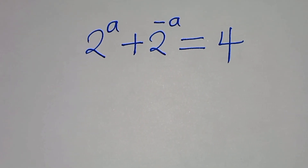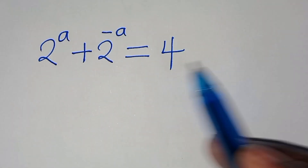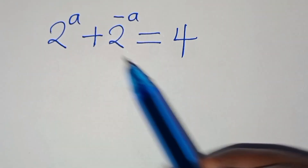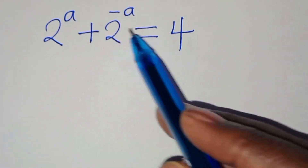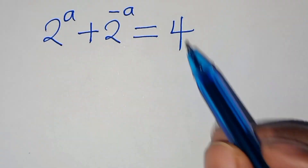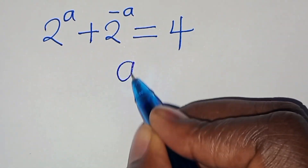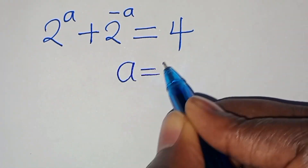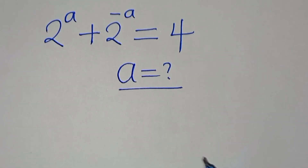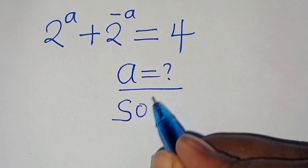Hello everyone, you are welcome to solve this nice math problem, which is 2 to the power of a plus 2 to the power of minus a, and this is equal to 4. So what is the value of a? Let's provide a solution.